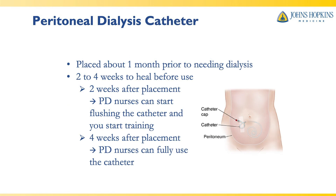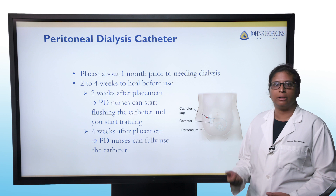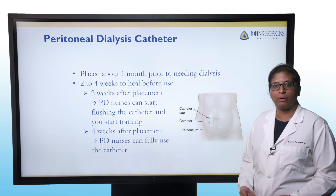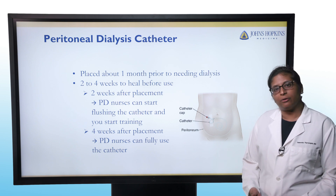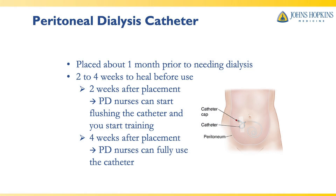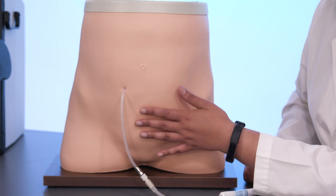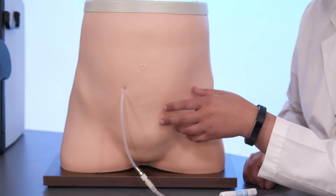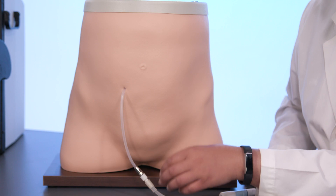We start with the peritoneal dialysis catheter. Unlike hemodialysis access, the PD catheter only needs to be placed about one month before treatments begin. It takes about two to four weeks to heal before nurses can start flushing the catheter and doing some exchanges. About four weeks after placement, you can fully use the catheter and training can begin. This picture shows someone with a peritoneal catheter. About 90% of catheters are placed in the lower abdomen, though sometimes they are placed in the chest due to different considerations.